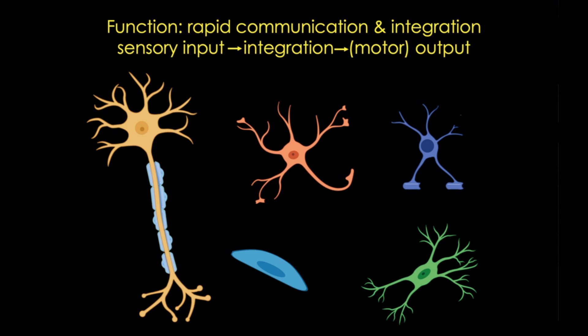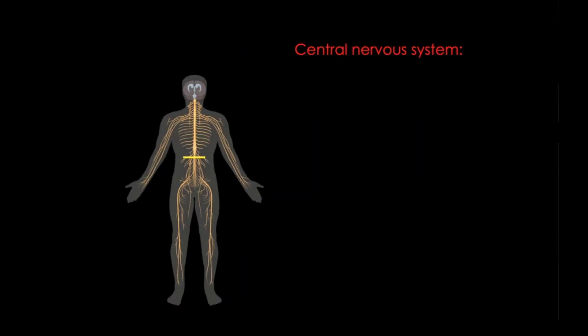In terms of organization, we can divide the nervous system anatomically into the central nervous system, or CNS, which consists of the brain and the spinal cord. The CNS also includes the ears and the eyes.